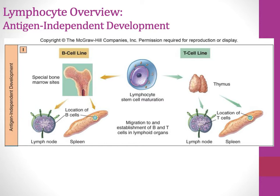For B cells, they mature and develop in the bone marrow. They're actually named for a structure found in birds, but it works out that they are found in the bone marrow during development. Once they've undergone selection, they move to the lymph node and spleen. This first stage is antigen-independent — there's selection to ensure you don't recognize self, but foreign material isn't actually present. If you respond to self proteins, you would be eliminated through apoptosis.